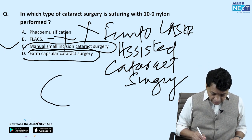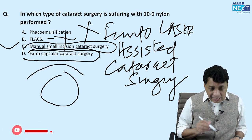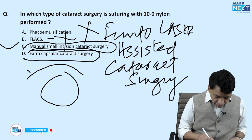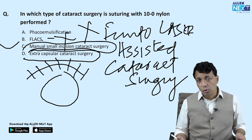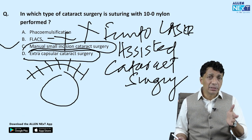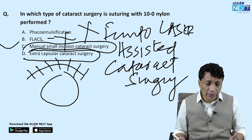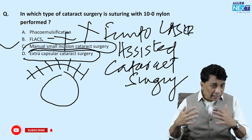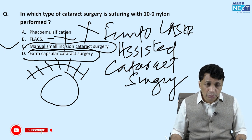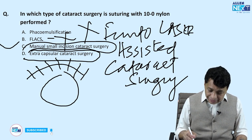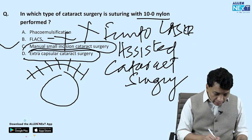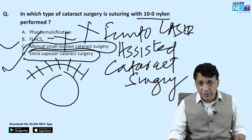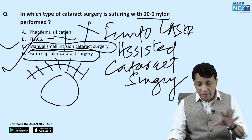The answer is extracapsular cataract extraction (ECCE), where the incision is eight to ten millimeters. This large incision cannot stay sealed on its own and must be sutured using 10-0 nylon. All other modern options — phaco, FLACS, and MSICS — are self-sealing sutureless cataract surgeries.